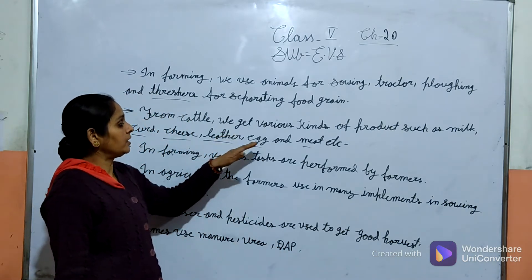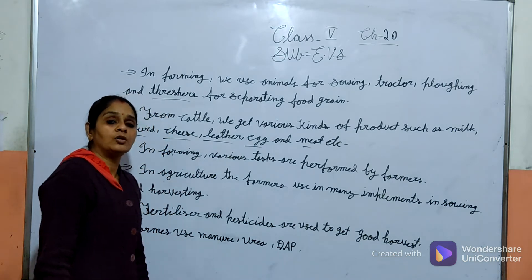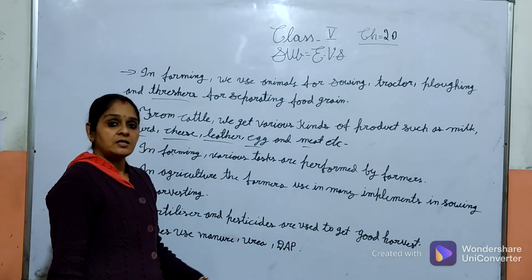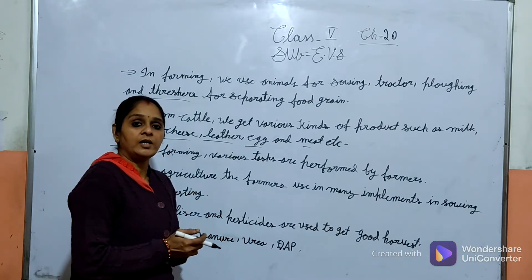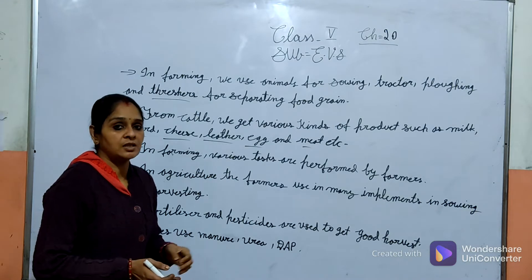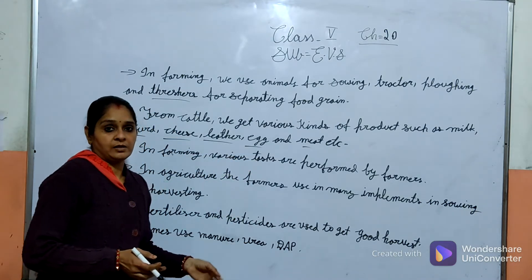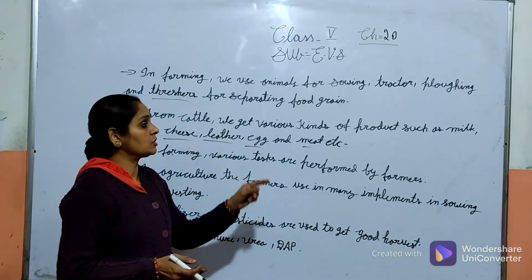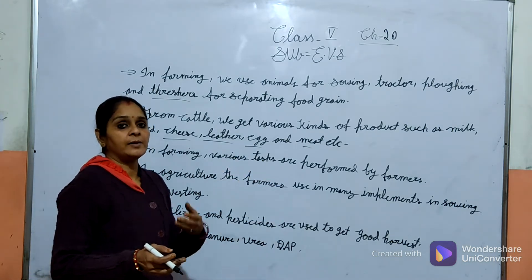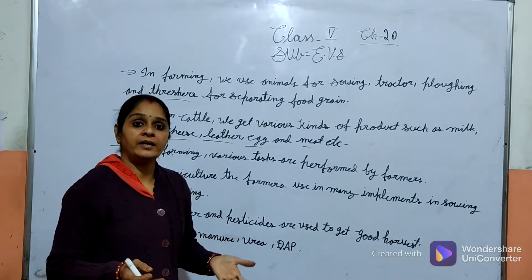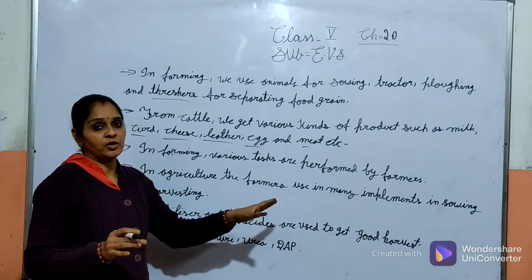We use animals like the goat, cow, buffalo, horses, and vans. These animals give us dairy products like milk, curd, buttermilk, and cheese. These are important farming and dairy products.